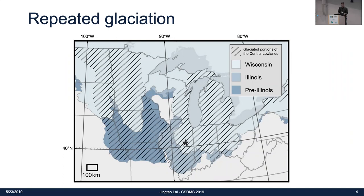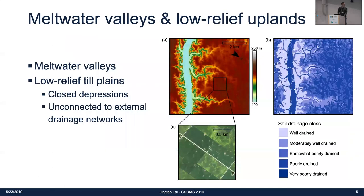The reason we have this is because repeated glaciation of the Laurentide ice sheet basically disrupts all the pre-existing drainage networks and deposits a thick pile of glacial tills. Then during deglaciation, meltwater from the ice sheet can carve some deep valleys. So the two important components for postglacial landscapes are: first, the meltwater valleys, and second, the low-relief uplands.